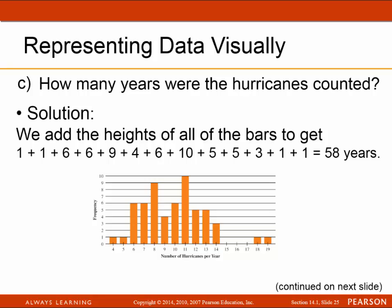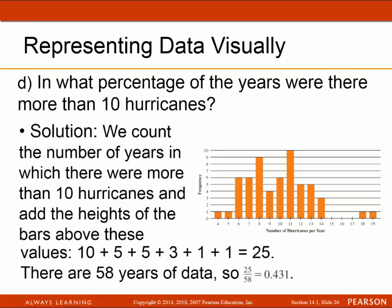How many years were the hurricanes counted? We add the heights of all the bars and get 58 years. What percentage of years had more than 10 hurricanes? We count the number of years with more than 10 hurricanes: heights of 10, 5, 5, 3, 1, 1 add up to 25. So 25 divided by 58 gives 0.431, which is 43.1%.